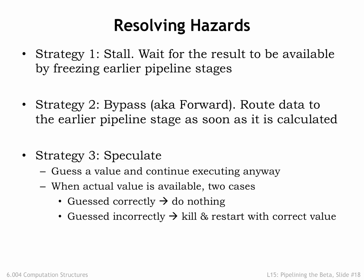The third strategy is called speculation. We'll make an intelligent guess for the needed value and continue execution. Once the actual value is determined, if we guessed correctly, we're all set. If we guessed incorrectly, we have to back up execution and restart with the correct value. Obviously speculation only makes sense if it's possible to make accurate guesses. We'll be able to use this strategy to avoid stalling on control hazards.